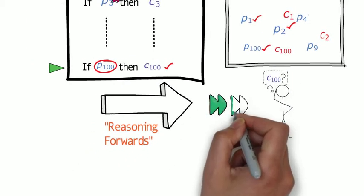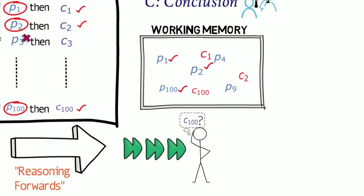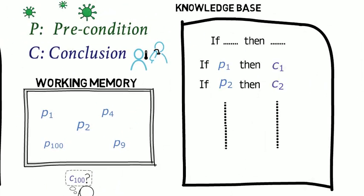But people are impatient. Could we answer faster? Remember Aristotle. We can start from the end. Look only at the right side of the rules. Do any give conclusion 100 straight away?